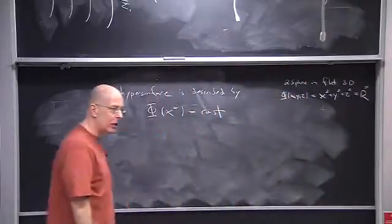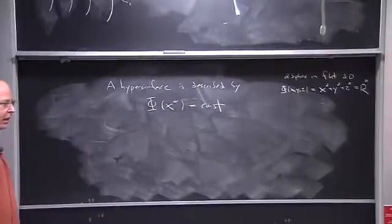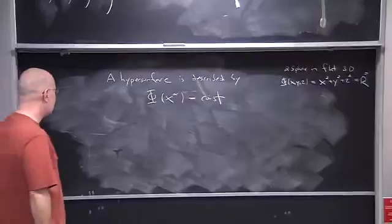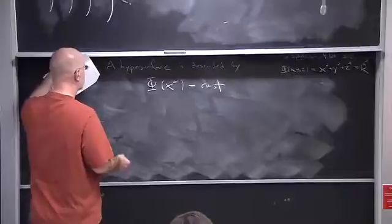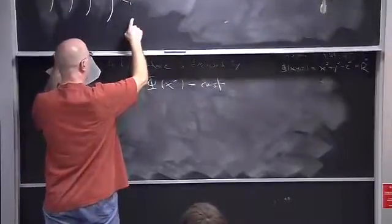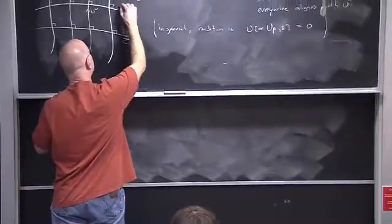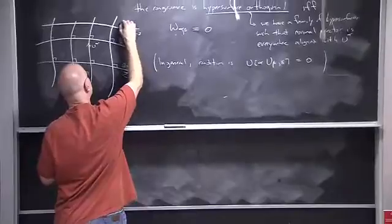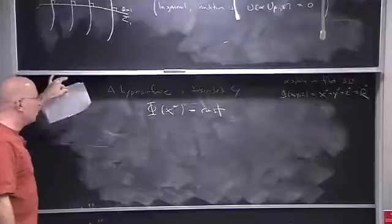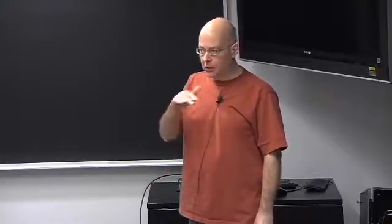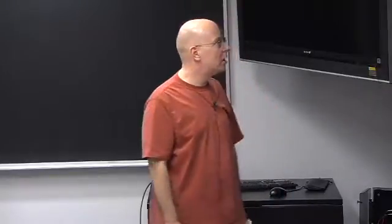Sigma one would be described by the function equaling, say, one. Sigma two would be the function equaling two, and so on. So phi equals a constant on each hypersurface, and the constant depends on which hypersurface we're talking about — a specific constant for each one.